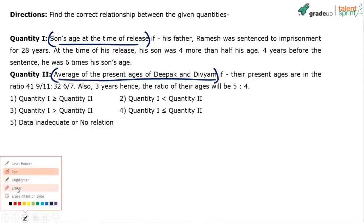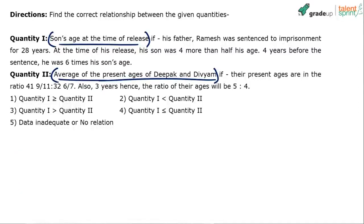The question is about comparison of quantities. We are going to compare two quantities: Quantity 1, which is the son's age at the time of release, and Quantity 2, which is the average of the present ages of Deepak and Divya.